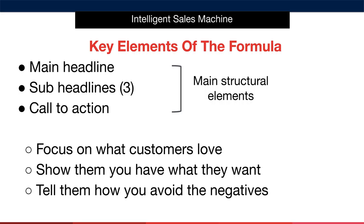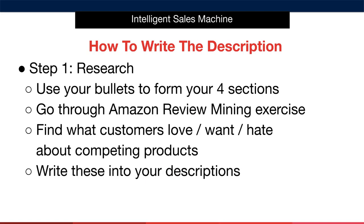You should use your Amazon review mining information to help you write benefit-driven statements. Focus on writing about the elements customers love about your product. You would have read about customers saying they loved certain things about competing similar products — tell them that your product has what they said they want from your competitors' products. Finally, tell them how your product will help them avoid negative experiences and how your product is better than the competition. Of course, you shouldn't actually reference your competitors when you're doing this.